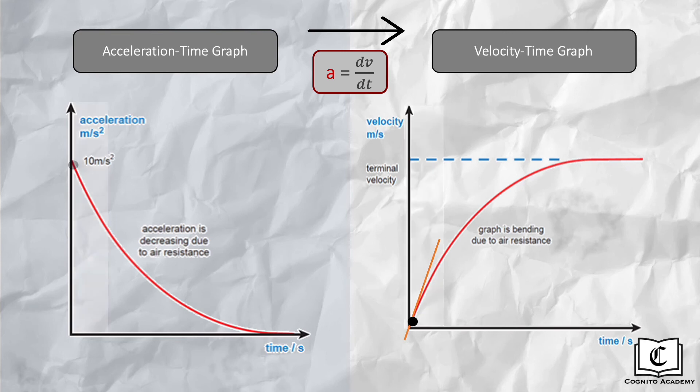Over time, the acceleration decreases, meaning our gradient for the velocity-time graph becomes less steep. And when acceleration reaches zero, our gradient for the velocity-time graph at this point is effectively zero, meaning the graph here is flat.